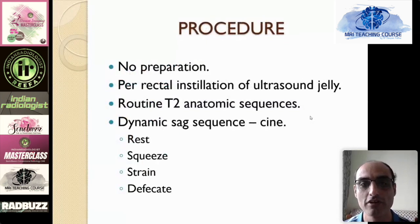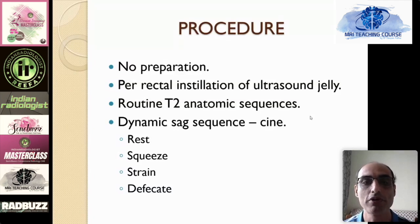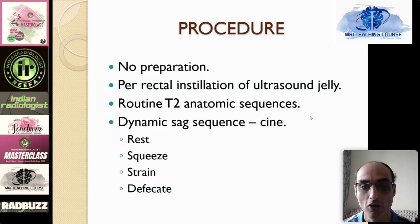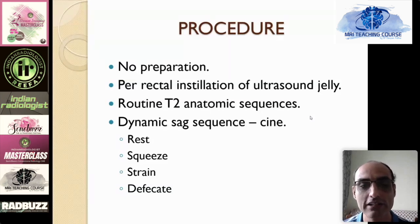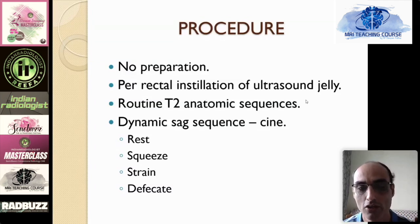The procedure is very simple. All routine MR departments should be able to do it. No patient preparation is required. There is per-rectal installation of ultrasound jelly, which is readily available in any radiology department. It is important to first do routine T2 anatomic sequences of the pelvis so you don't miss a big pelvic mass causing obstruction to the rectum. Then we do the dynamic sagittal sequence. When this sequence is running, the patient has to perform certain maneuvers.